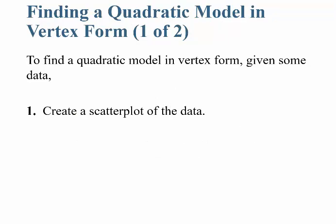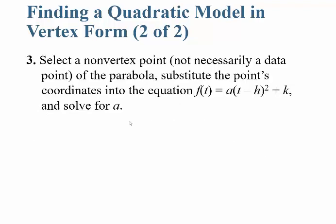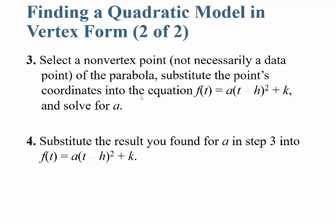If you want to find a quadratic model in vertex form: first, create a scatter plot of the data and imagine a parabola close to the data points, selecting a point (h, k) as the vertex — often it's convenient to select the highest value for k. Then select a non-vertex data point from the parabola, substitute its coordinates into the equation, and solve for a. Finally, substitute your result for a along with h and k into the equation.